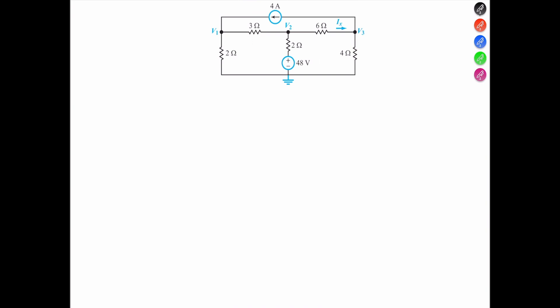So let's apply KCL at V1. KCL at V1, we see that V1 with reference to ground, so V1 minus 0 volts, all over 2, or you could say just V1 divided by 2.